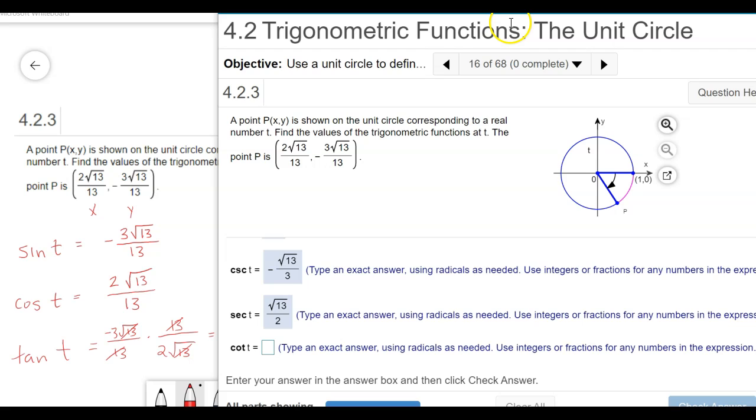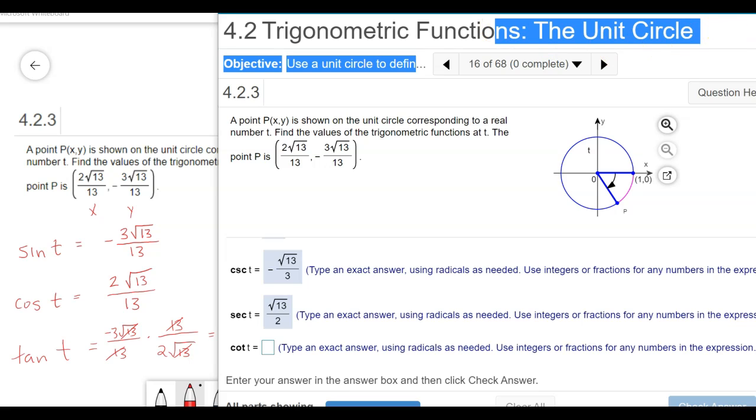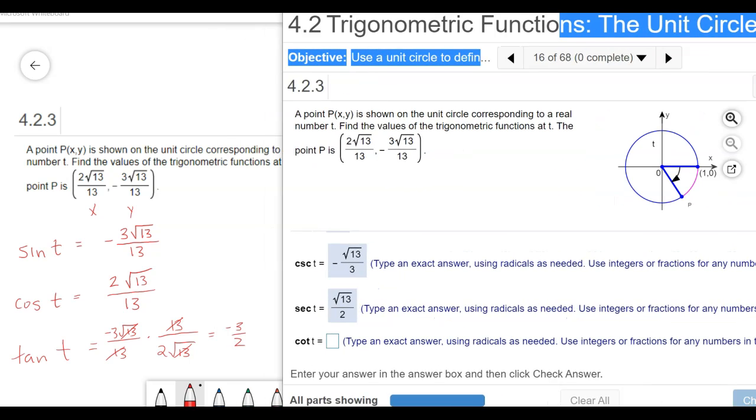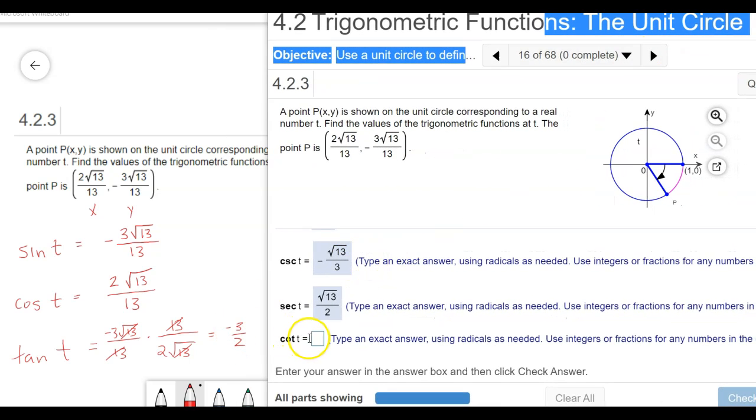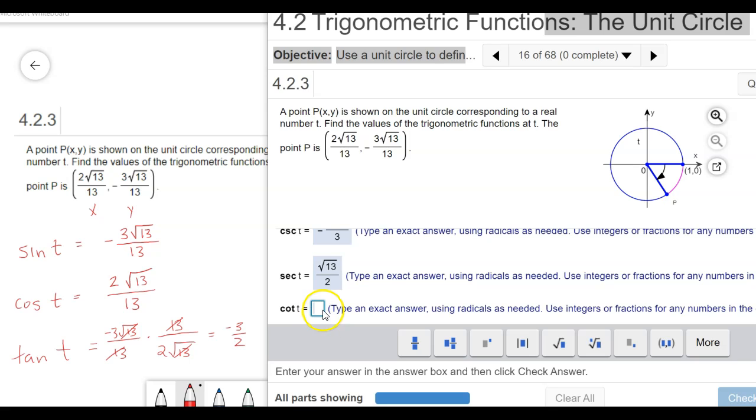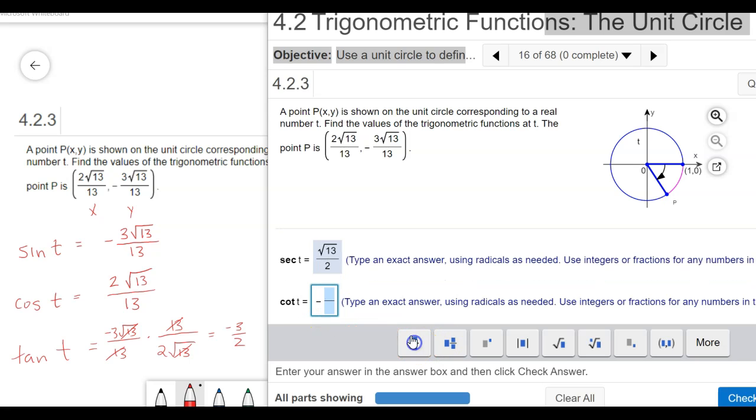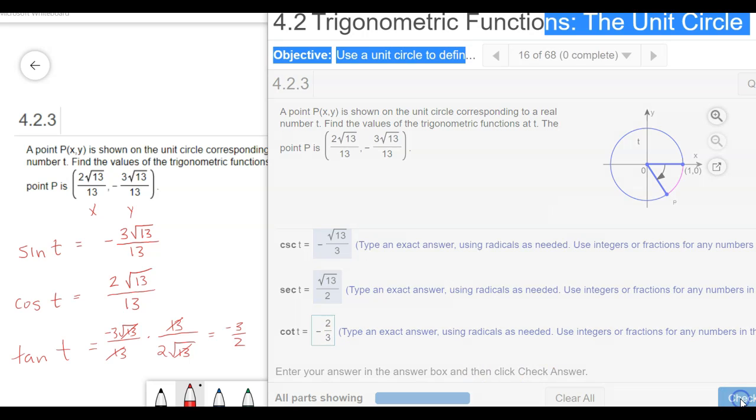And then finally cotangent. This one's the easy one because tangent didn't have any radicals, so cotangent won't either. It'll just be negative two-thirds if I flip that around. So I got a negative fraction, two on the top, three on the bottom, and there's the cotangent.